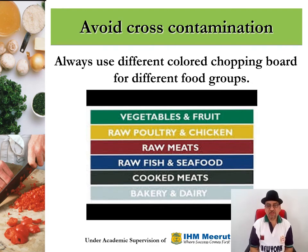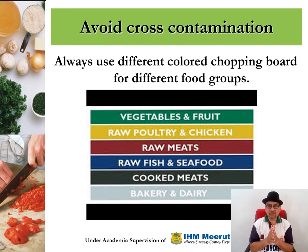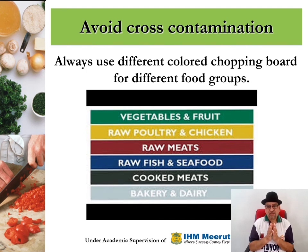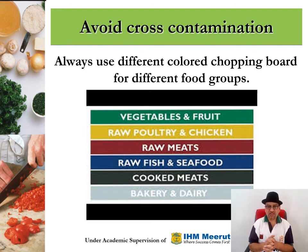One of the ways to avoid cross-contamination is always to use different colored chopping boards for different food groups. Vegetables should be cut only on a green colored chopping board, raw poultry and chicken on a yellow colored chopping board, raw meats on a red chopping board, fish and seafood on a blue chopping board, cooked meats on a gray chopping board, and bakery and pastry on a light green chopping board.